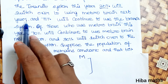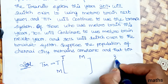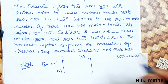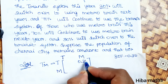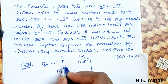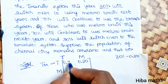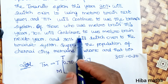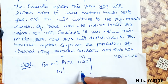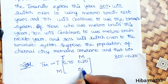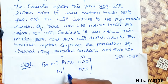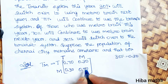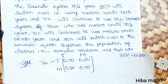The transition matrix values are: 30% will switch to metro (0.30), 70% will continue using transit (0.70), 70% of metro will switch to transit (0.70), and 30% will continue using metro (0.30). This forms our transition matrix.